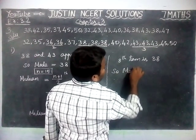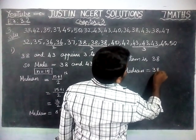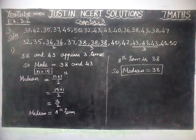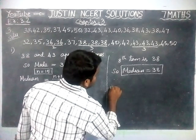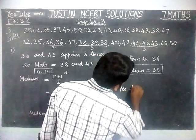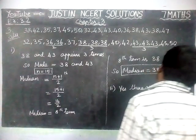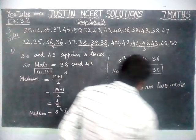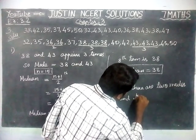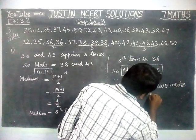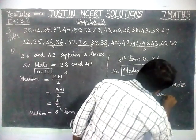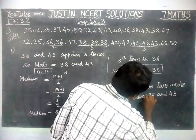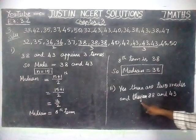So, median of the given data is equal to 38. And the second question — is there more than one mode? Yes, there are two modes: 38 and 43.